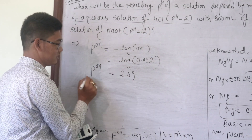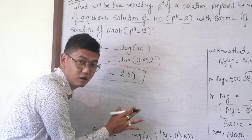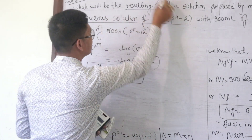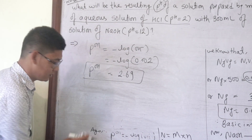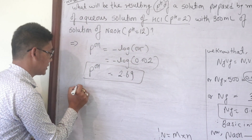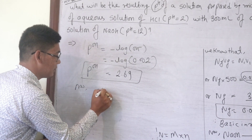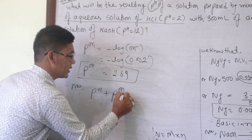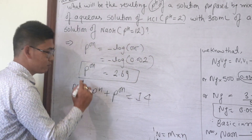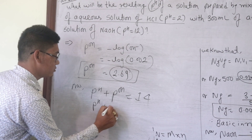What is pOH? The final solution gives pOH equal to 2.69. Now using pH plus pOH equals 14, therefore pH is equal to 14 minus 2.69.